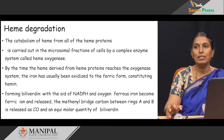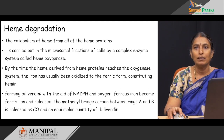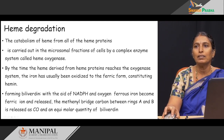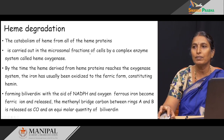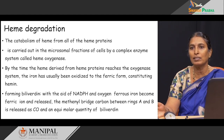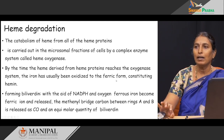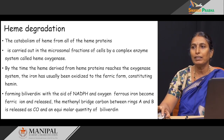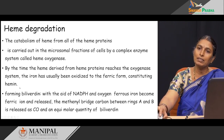Once heme is released from hemoglobin as well as heme proteins, the degradation of heme takes place. The catabolism of heme from all heme proteins takes place in microsomal fractions of cells by a complex enzyme system called heme oxygenase. By the time the heme derived from the heme proteins reaches the oxygenase system, the iron has usually been oxidized to the ferric form. In heme, the iron is present as Fe²⁺, but when it reaches the oxygenase system, it becomes the ferric form — a porphyrin ring with Fe³⁺ — called hemin.